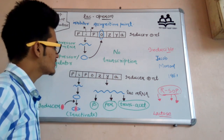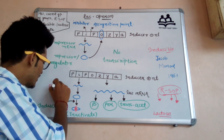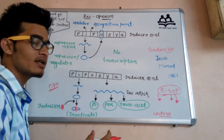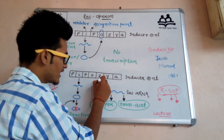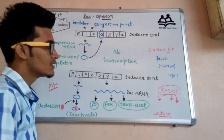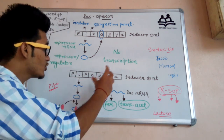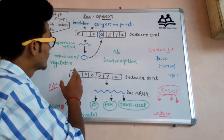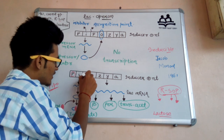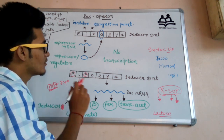In our book, seven genes are given: P, I, P, O, Z, Y, A. A simple trick to remember them is the word 'People' followed by Z, Y, A — so 'People Z Y A'. P is present at the first and third positions. Just remember 'People Z Y A' a couple of times and you'll have it.